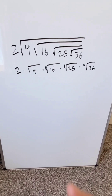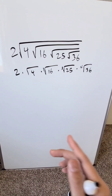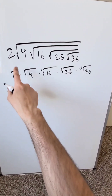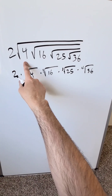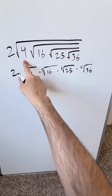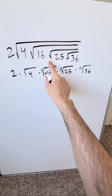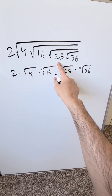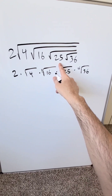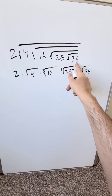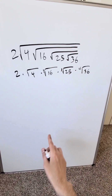Let's have some fun evaluating this expression on the top. I'm looking here at 2 times the root of 4, times within that the root of 16, times within that the root of 25, and times within that the root of 36.